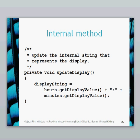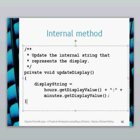The external method calls within updateDisplay are hours.getDisplayValue and minutes.getDisplayValue. These represent the hours object and the minutes object, so we're calling from two different objects. What we're doing here is creating the display string, which takes the two different displays from the hours object and the minutes object to create our final display. That's an example of how internal and external method calls work together.